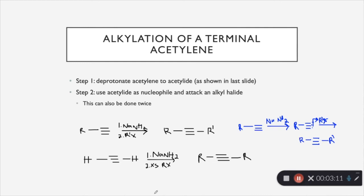And like I said, this can be done twice if you have a hydrogen on both sides of the carbon of the triple bond. And it's the exact same process, you just do it for both sides of it. And notice here, if you're doing it twice, you need an excess reagent of the alkyl halide. Because if you only have one equivalent of it, it will only go through that process one time.